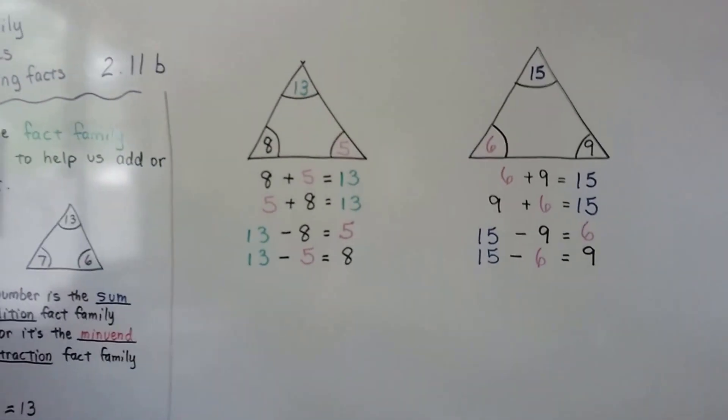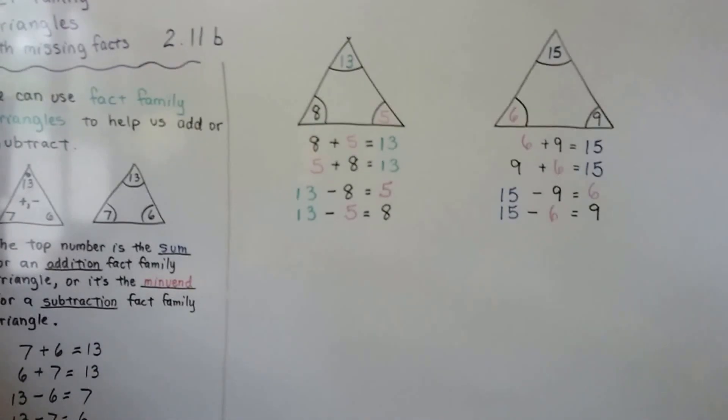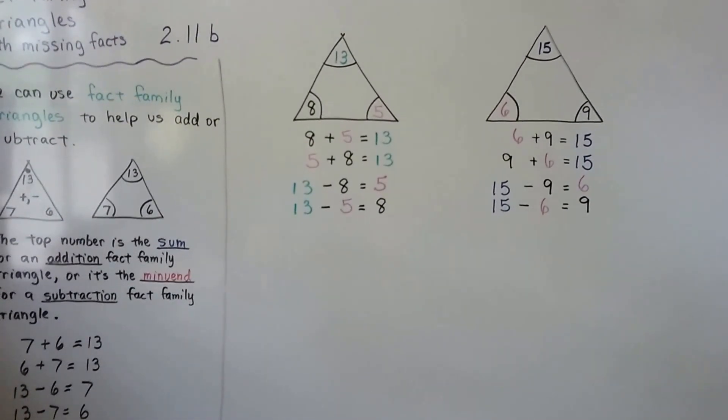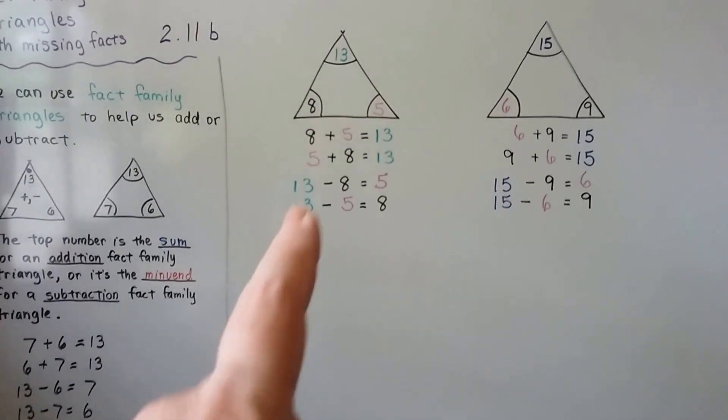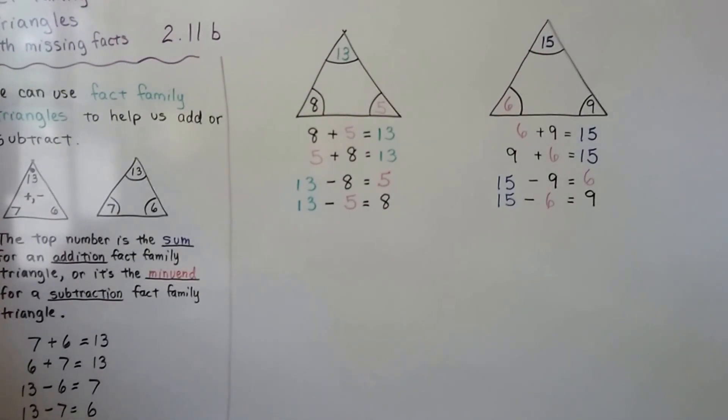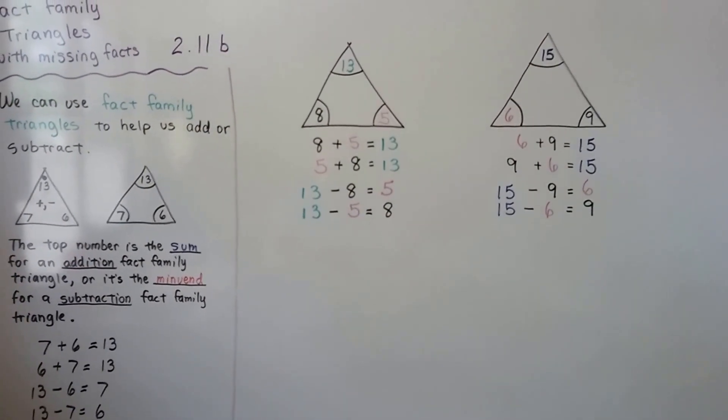So you can fill in the missing corner of a fact family triangle by writing out the fact family two addition and two subtraction sentences and then answering the number sentence that looks the easiest to answer. I'll see you next video. Bye.